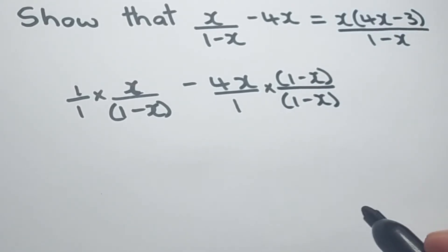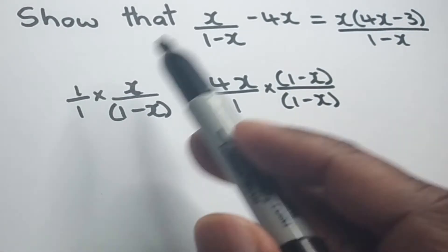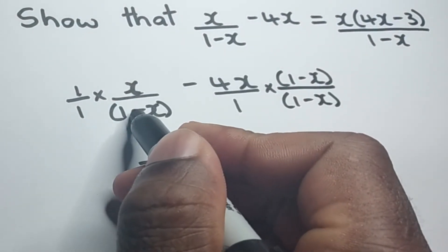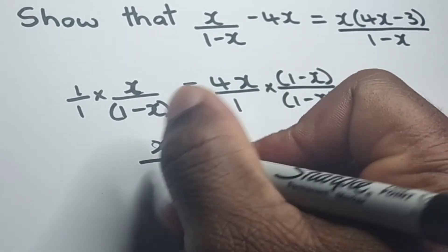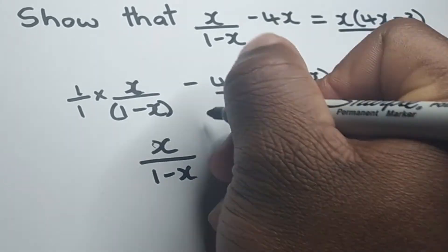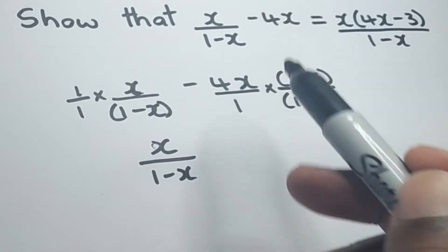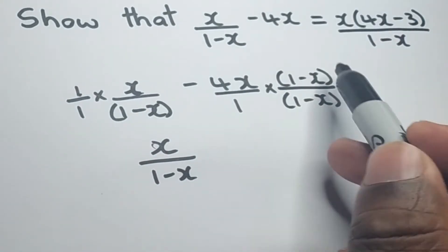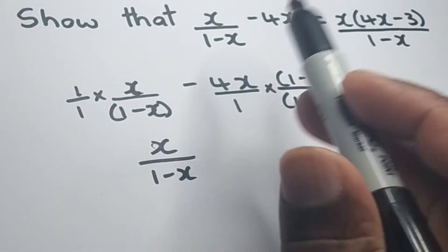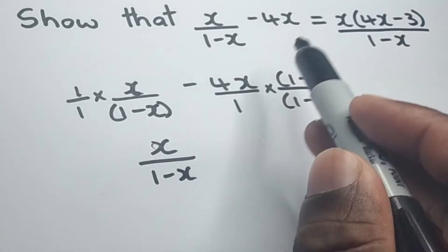And what that will give us now, we'll end up with 1 times x, which is x over 1 times (1-x). And 1 times anything will remain the thing. So we'll still have the 1-x here. And what we have to do now, we are required to treat with this thing using the distributive law. So we have to be very careful right here, being that we have a negative sign right here.